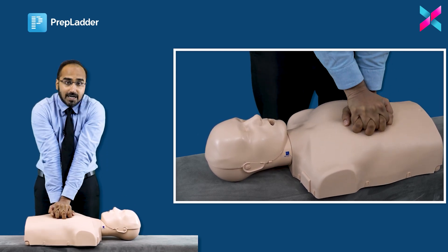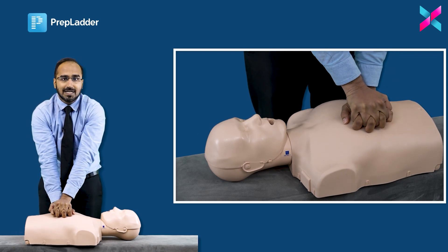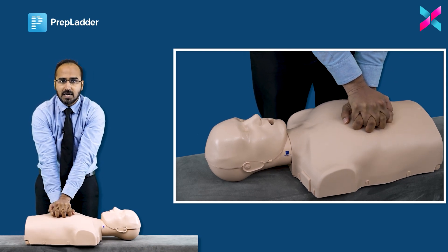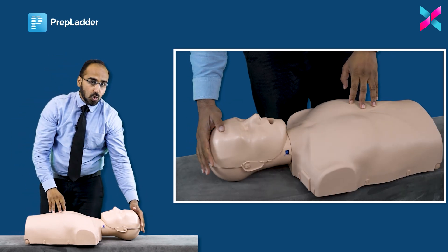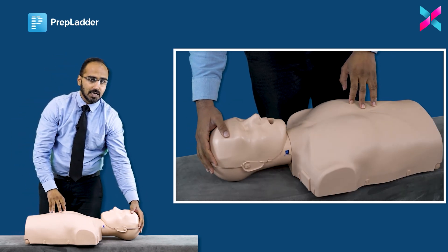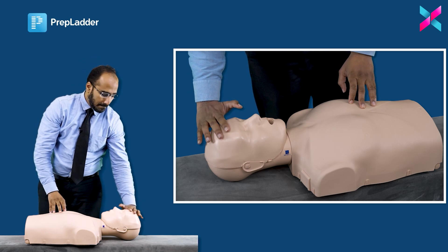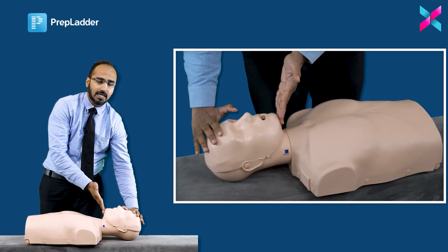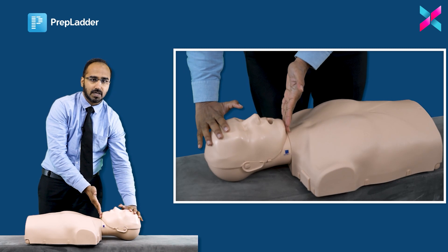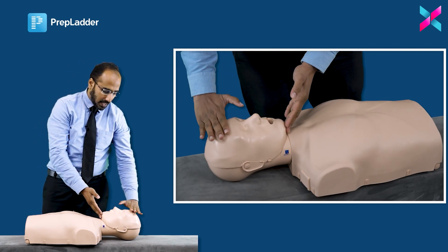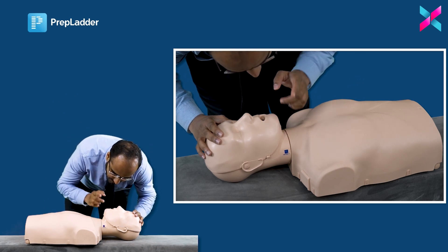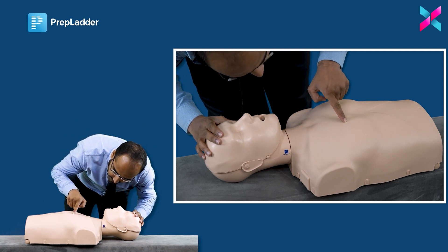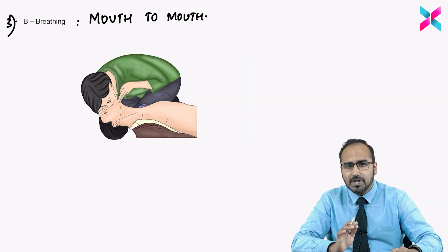The depth of compression in adults should be 5 to 6 centimeters or 2 to 2.4 inches. After 30 compressions, the next step is to open the airway using head tilt or chin lift. Then give rescue breaths, and while giving rescue breaths, keep your eyes on the patient's chest to look for chest rise.